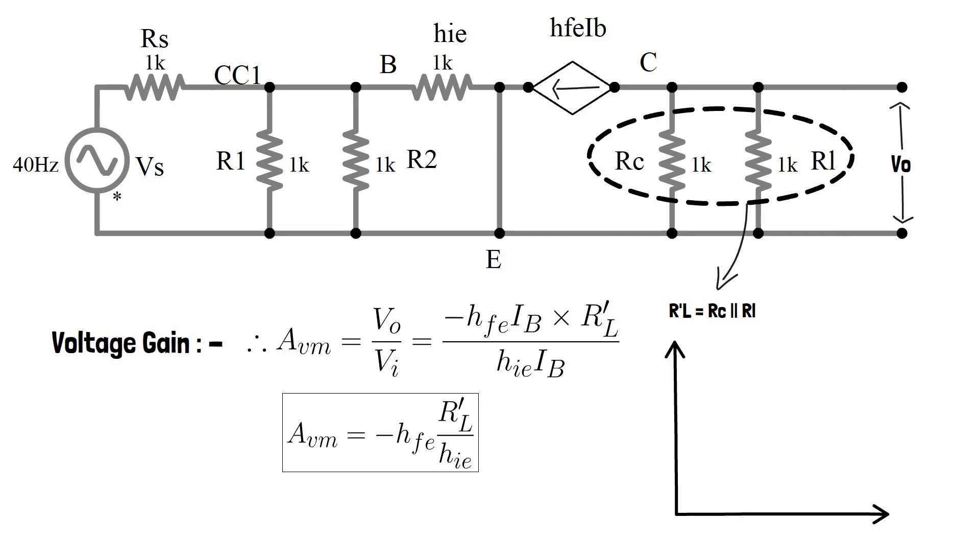So we get the graph as shown. Since the above equation is independent of frequency, AVM is constant as frequency gets increased.